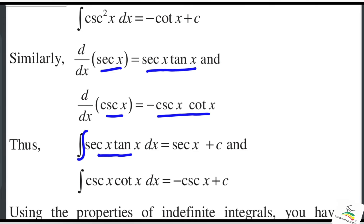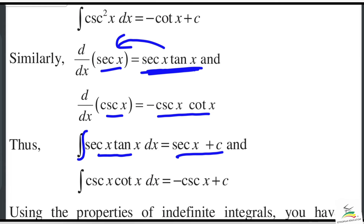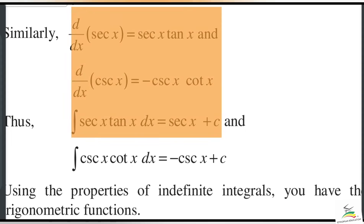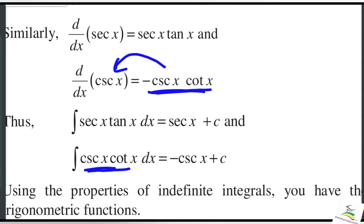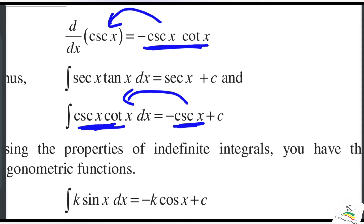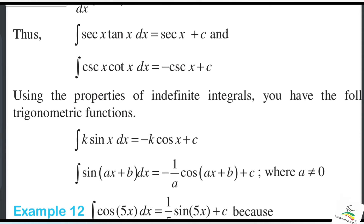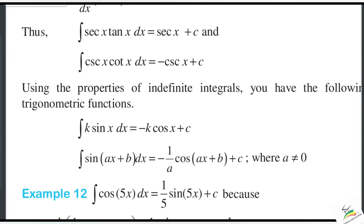So the integration of sec x·tan x equals sec x plus C. To revisit: sec x·tan x — the integration comes out to sec x plus C. And the integration of cosec x·cot x: since negative cosec x times cot x is the derivative, the positive cosec x·cot x integrates to negative cosec x plus C.